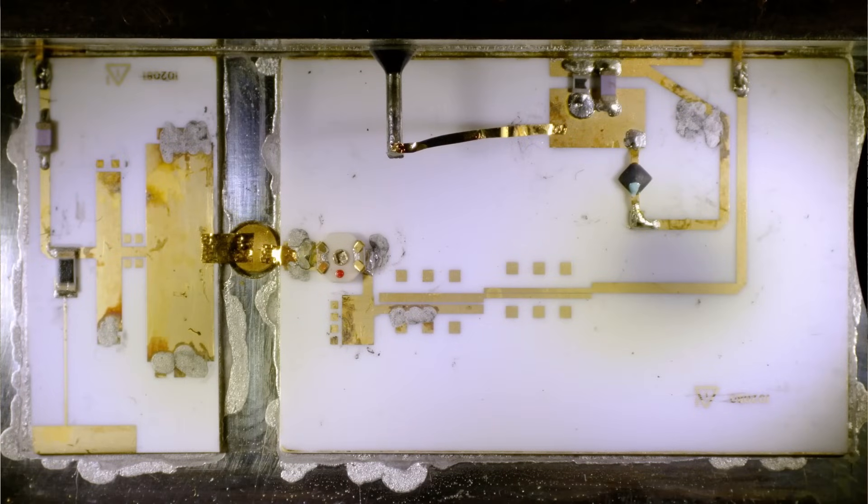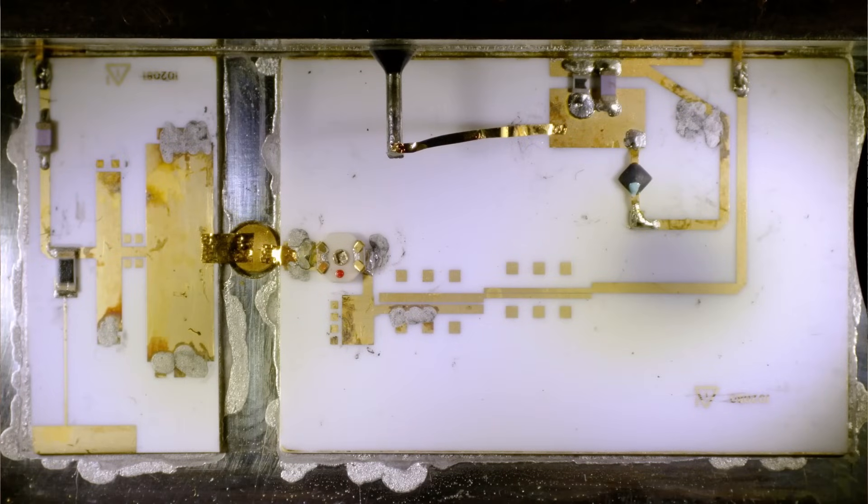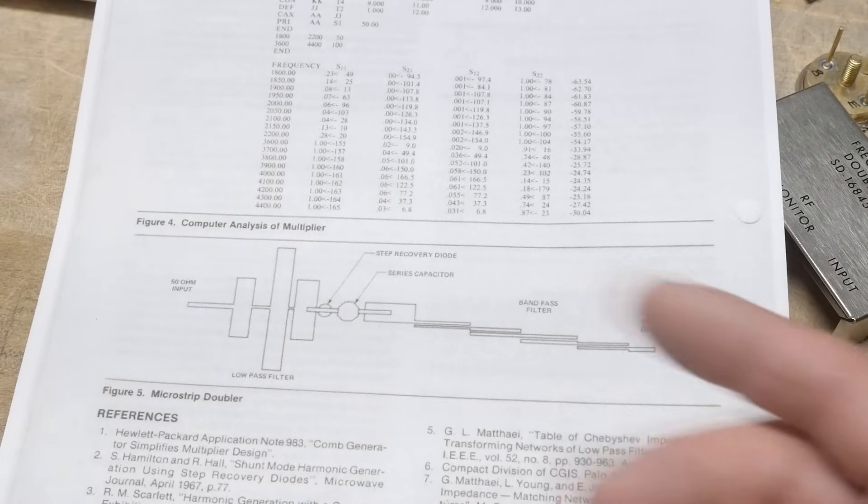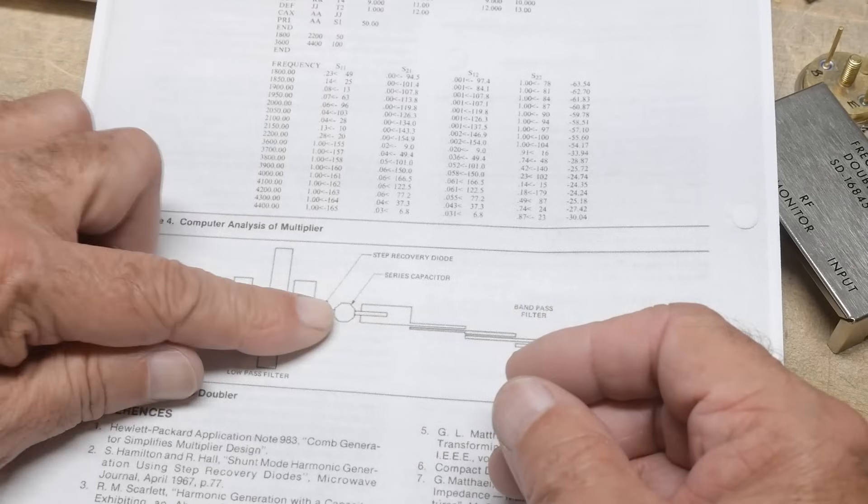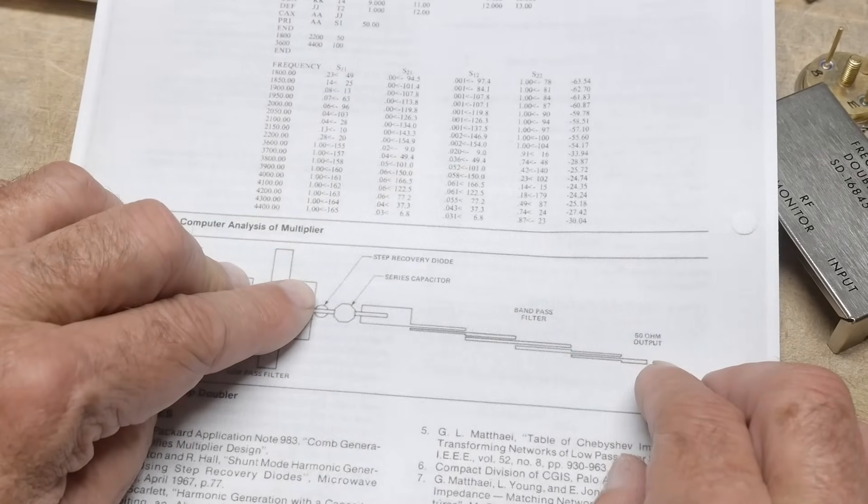So why do you want a low pass filter and a high pass filter? A low pass filter, you're going to double things. And so let's say you're going to double 1 gigahertz to 2 gigahertz. So you've got 1 gigahertz coming in and you want 2 gigahertz going out.